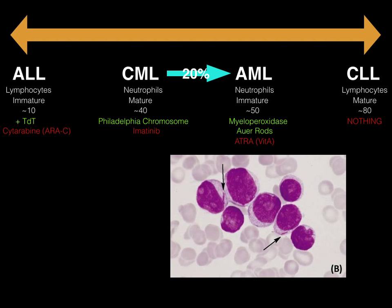This is the summary slide — this is everything you need. It is high yield. Know the ages — they will help you guess if you need to. Know the treatments and know the defining characteristics of each. Good luck.